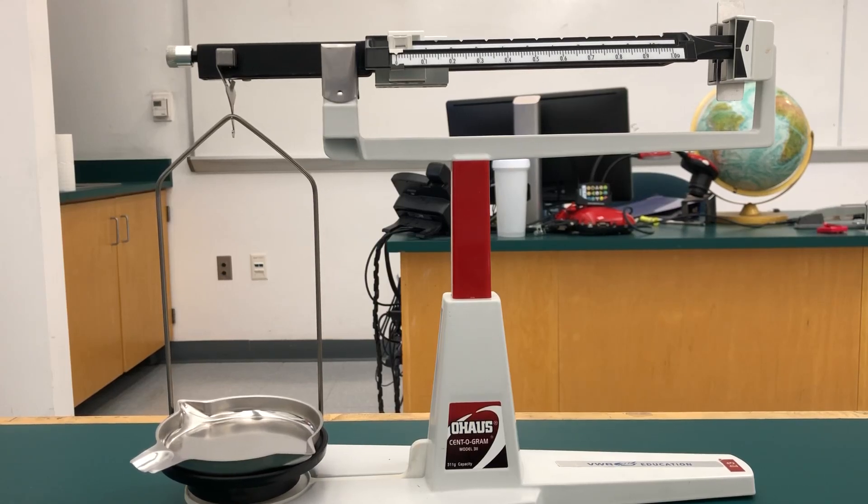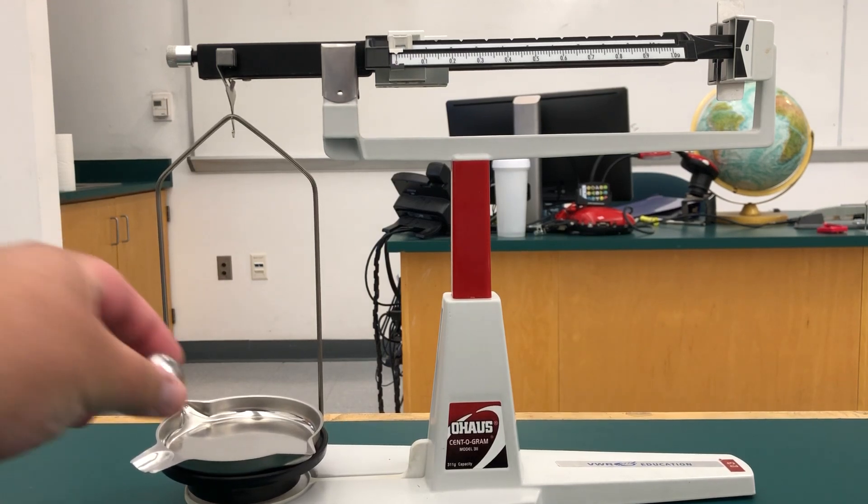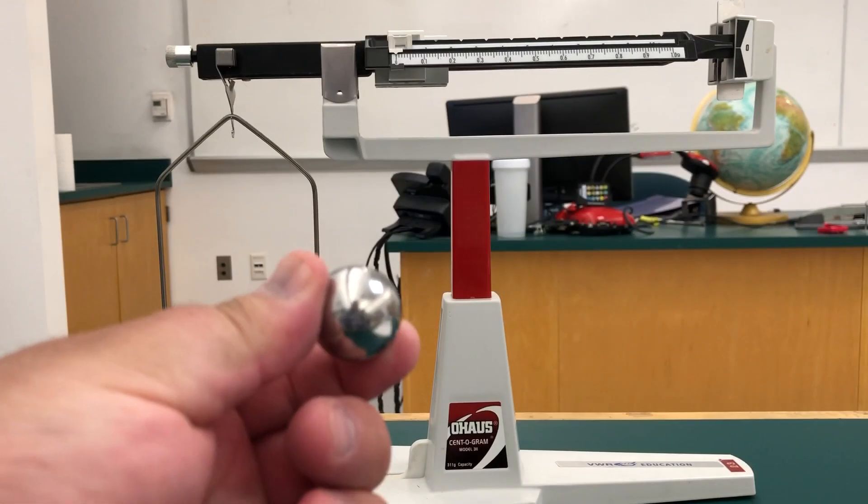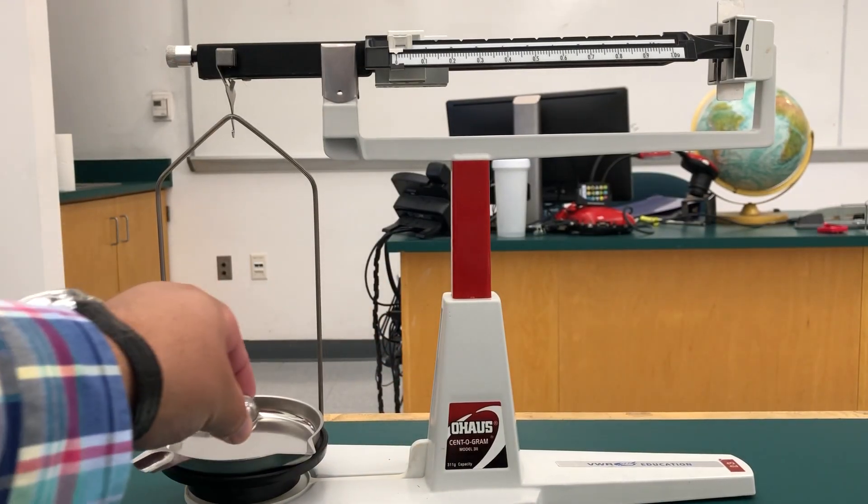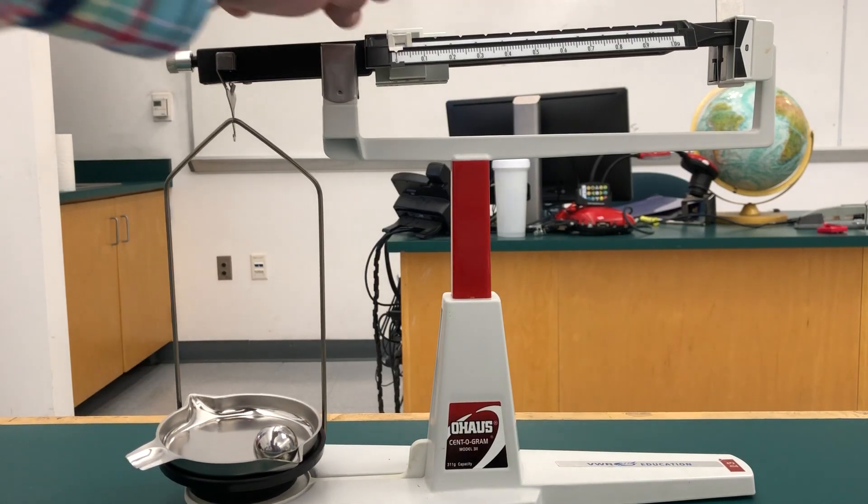For this experiment, for ballistic pendulum lab part one, we need to measure the mass of the steel ball, the mass of the projectile that we will be using for launching with the launcher. So let's put the steel ball on the scale and get the mass as usual.